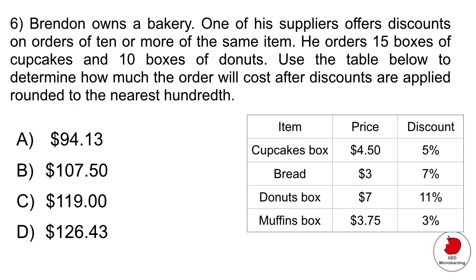Question six, Brendan owns a bakery. One of his suppliers offers discounts on orders of 10 or more of the same item. He orders 15 boxes of cupcakes, 10 boxes of donuts. Use the table below to determine how much the order will cost after discounts are applied, rounded to the nearest hundredth.